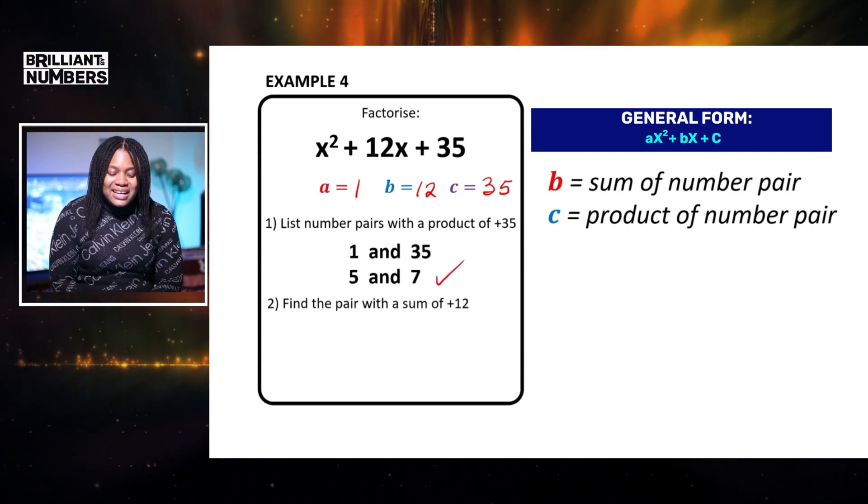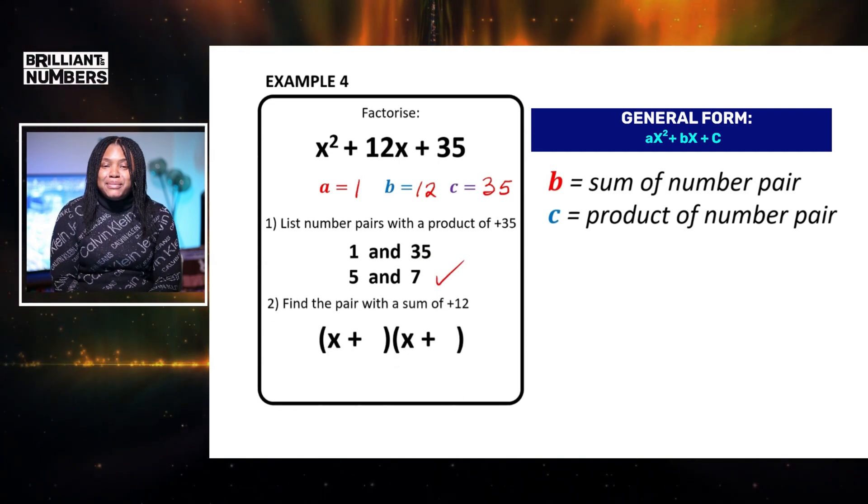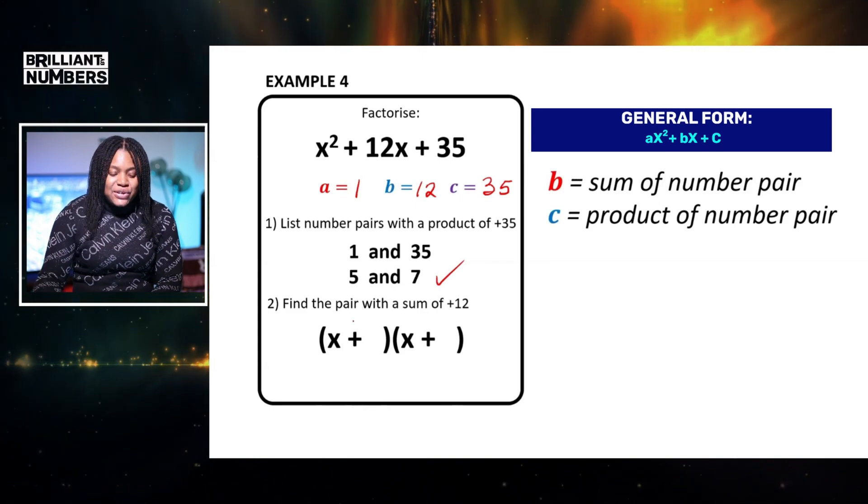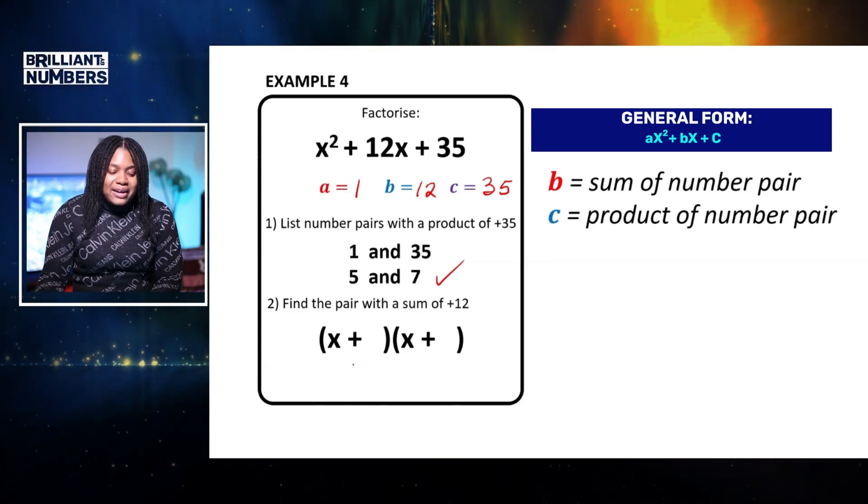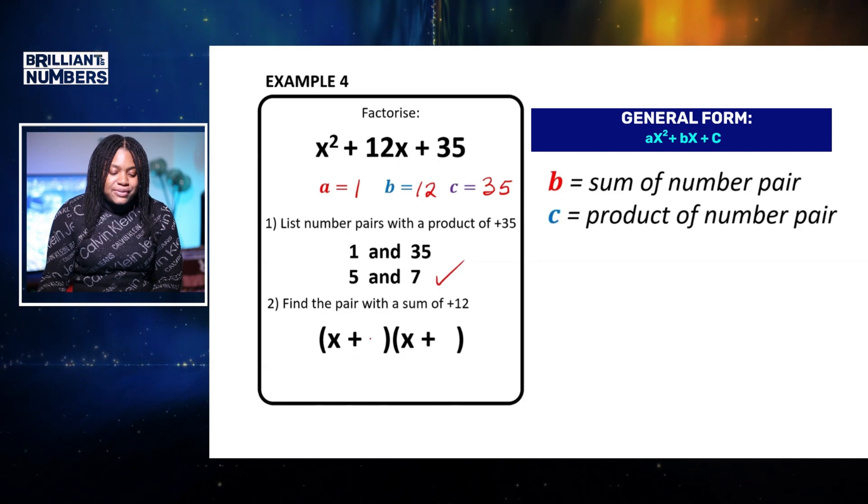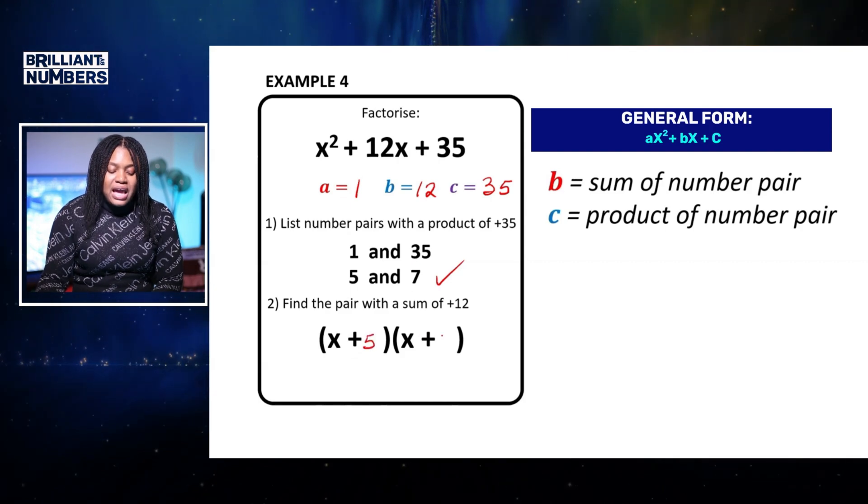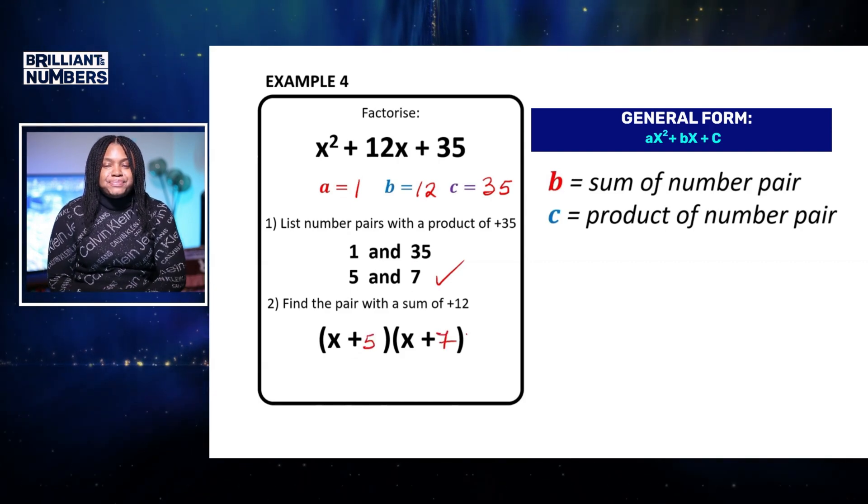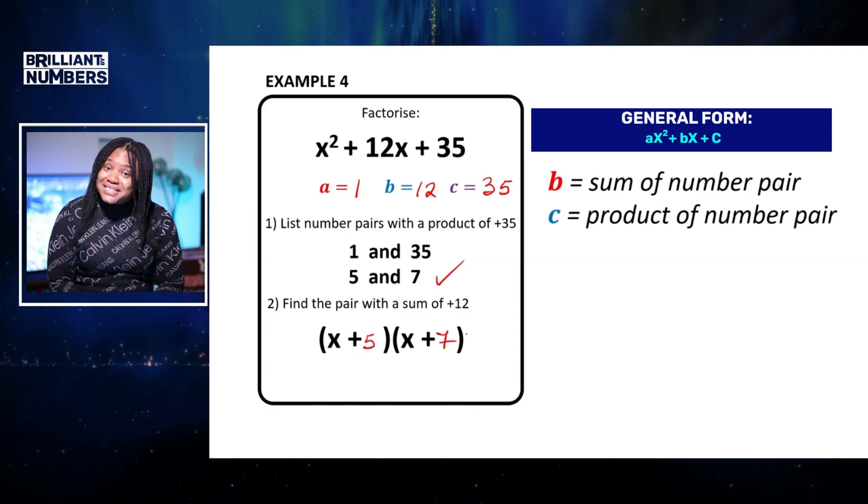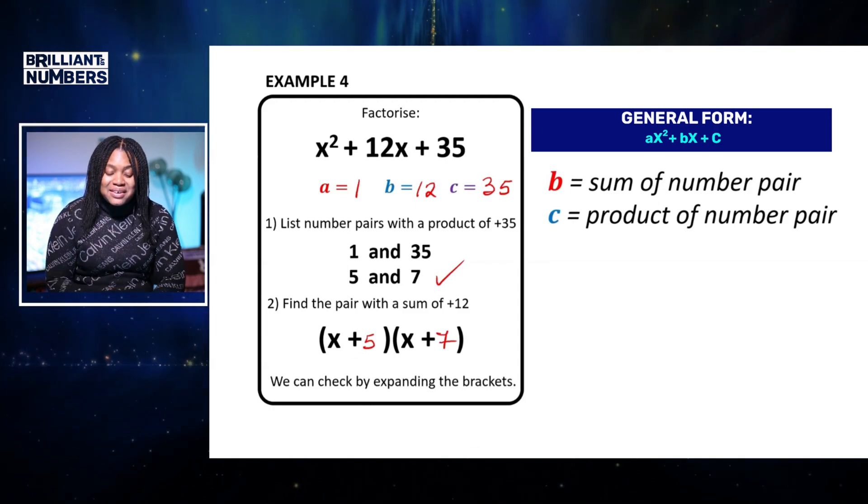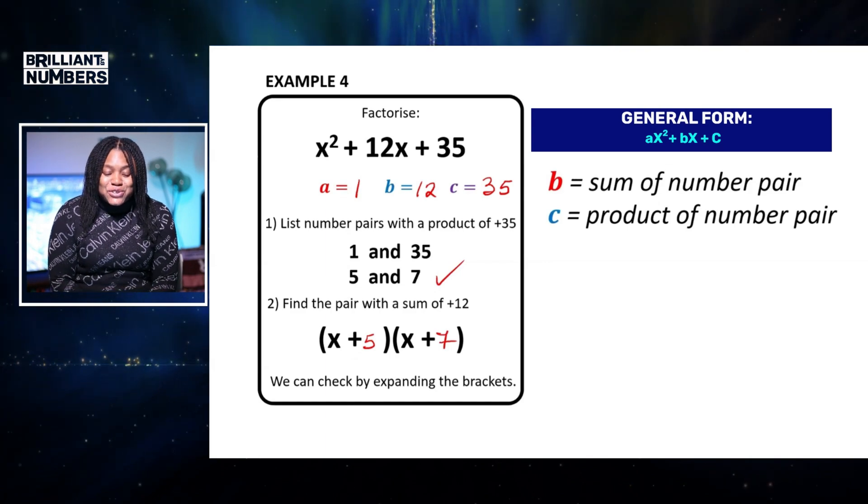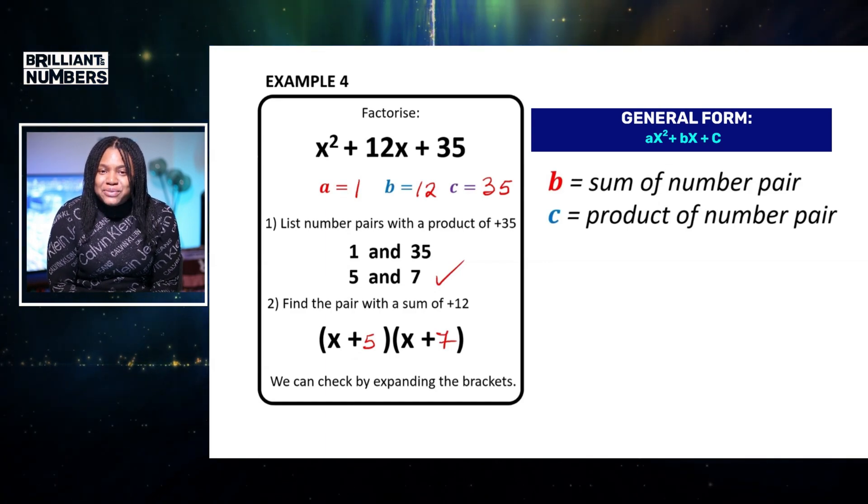So all we need to do at this stage is just simply to put them into our bracket. So the answer is x plus 5 and x add 7. And don't forget, you can prove your answer by expanding the brackets to ensure that your answer is correct.